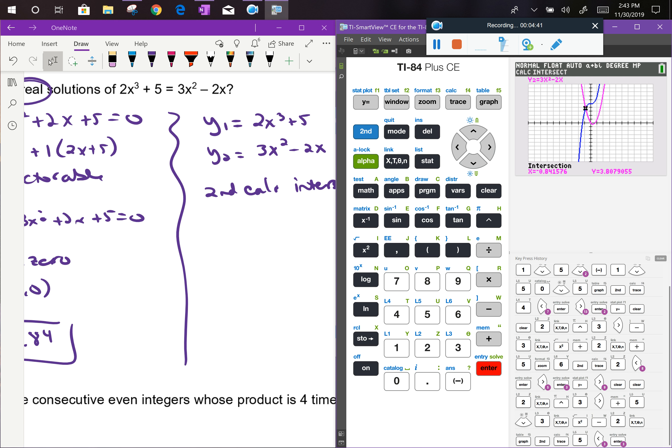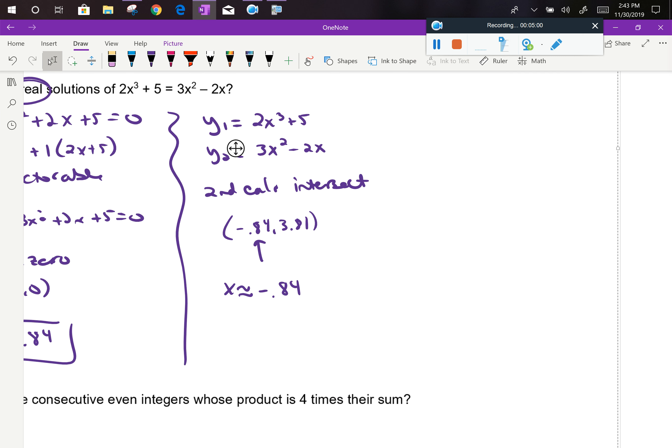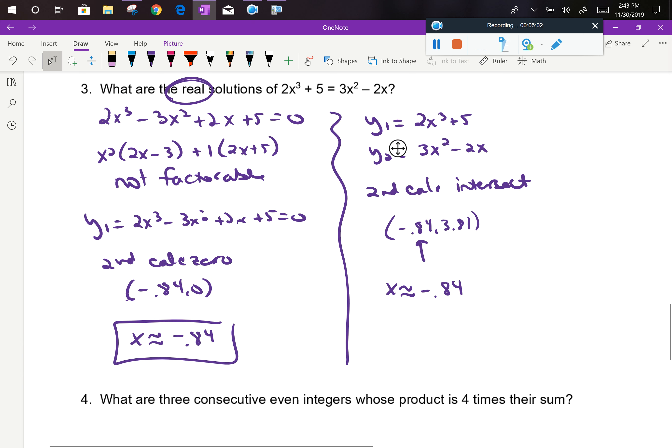So that point, negative 0.84, 3.81... Only the x value is relevant, it still gives me that x is approximately equal to negative 0.84. So both of those solution methods can work for this type of problem.